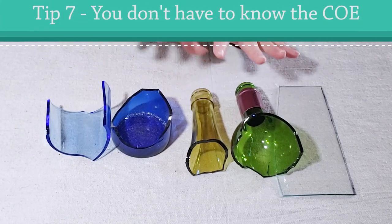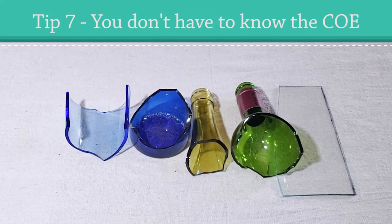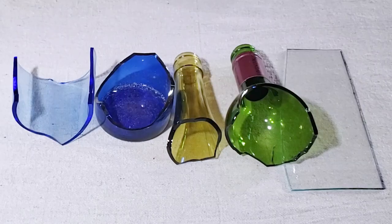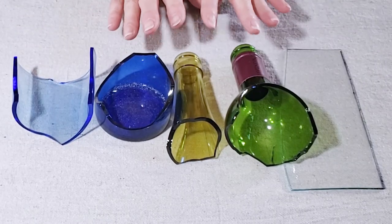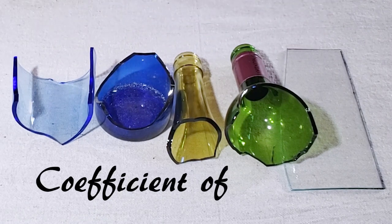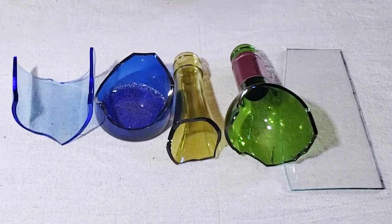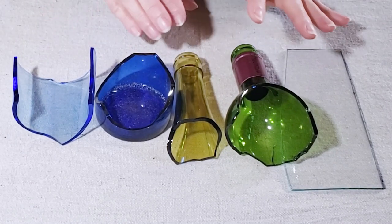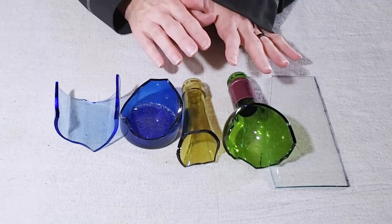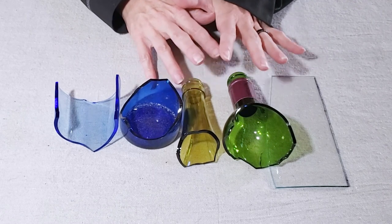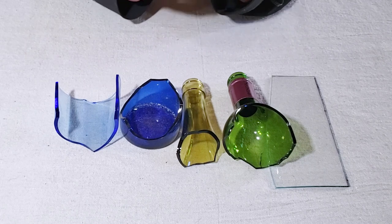Tip number seven has to do with the COE of glass. If you've never heard that term it can be a little intimidating but it refers to the coefficient of expansion of glass. Different glasses have different coefficients of expansion. If you purchase glass you will probably be able to determine the coefficient of expansion. If you do a lot of glass fusing and you do bigger pieces then I believe that the coefficient of expansion is a much more important thing to know.